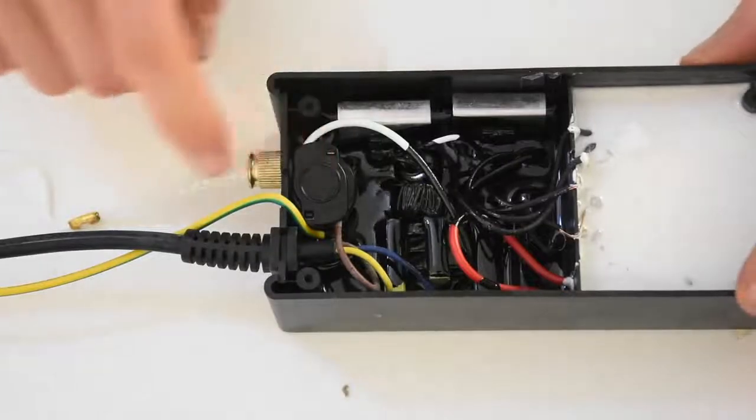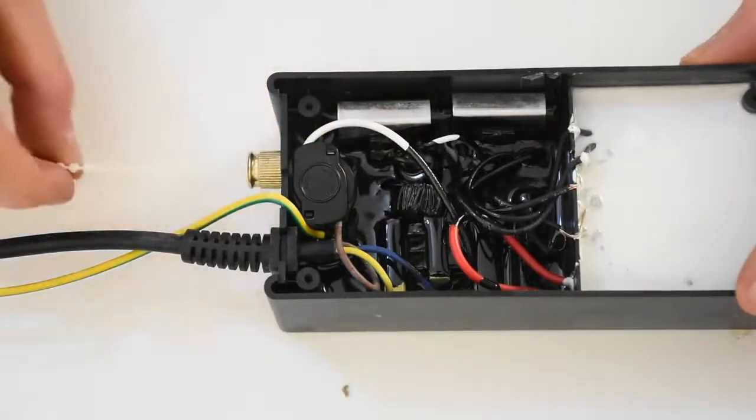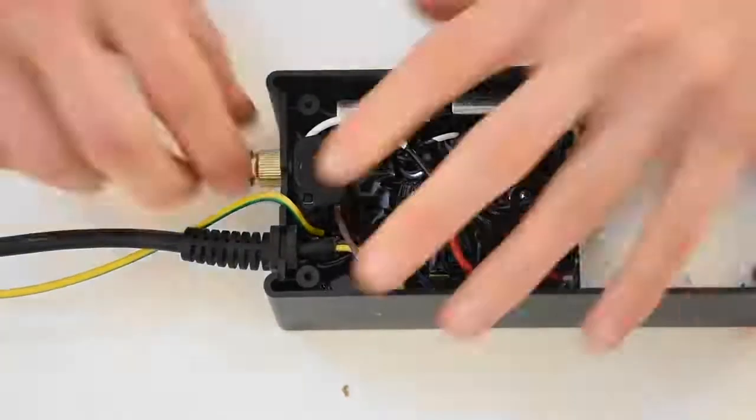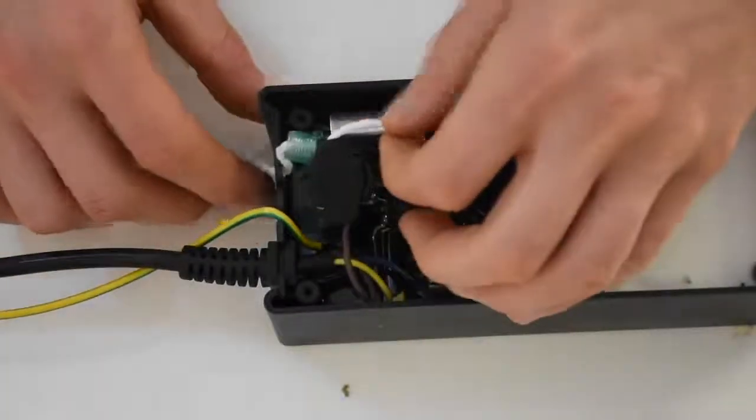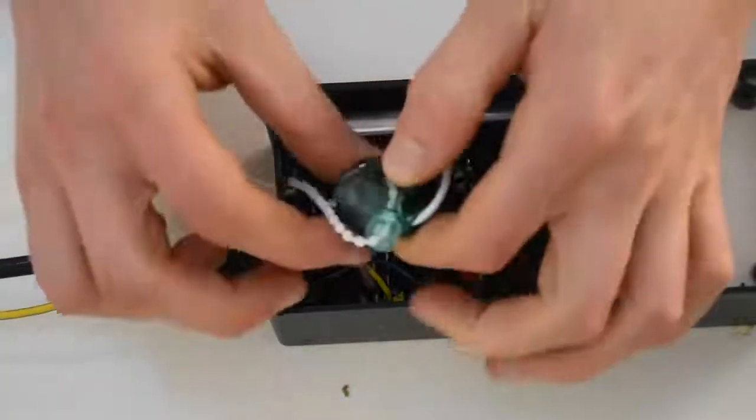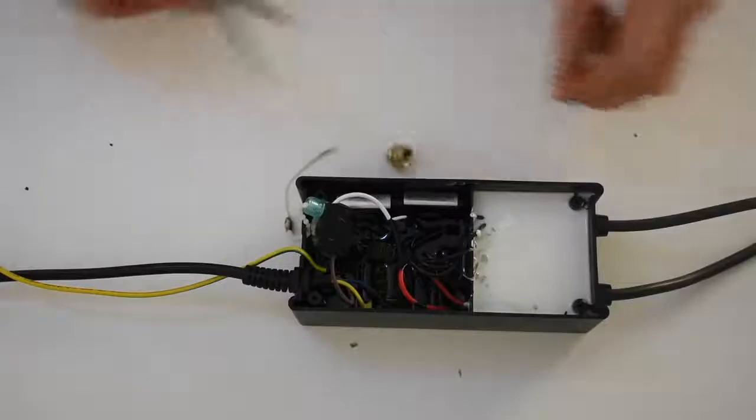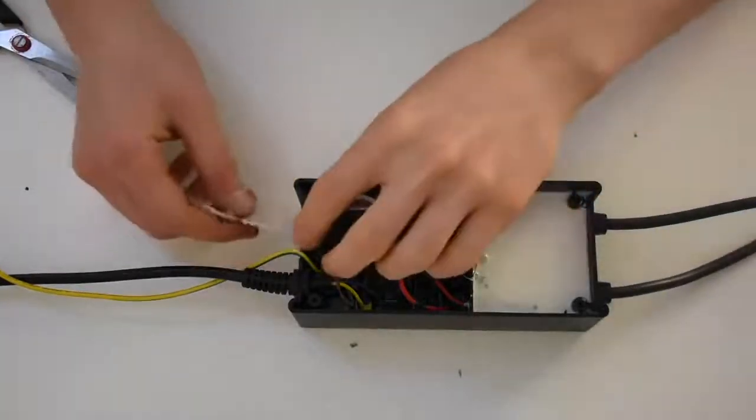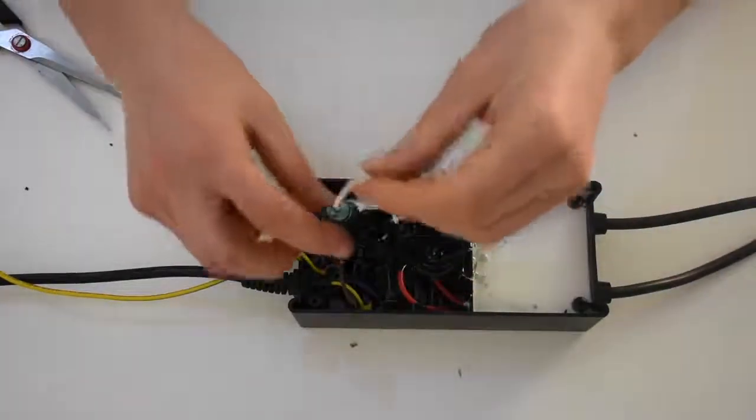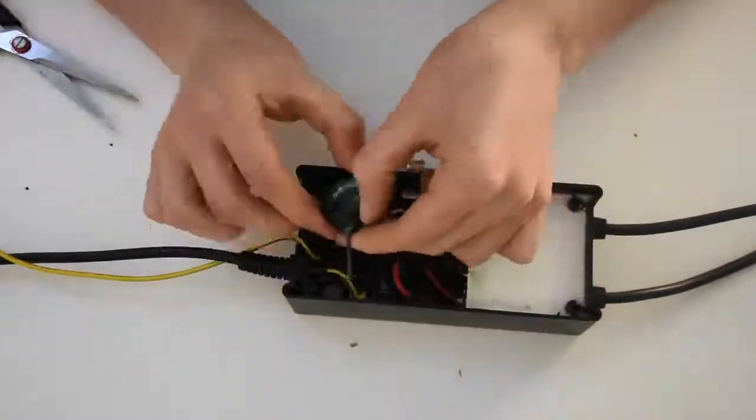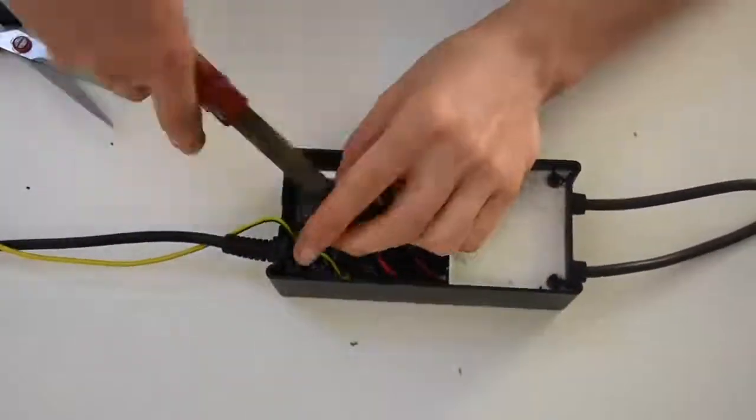So as you can see here is the pull switch and this is what we need to remove. Right now I'm trying to free the two wires that connect to the switch.